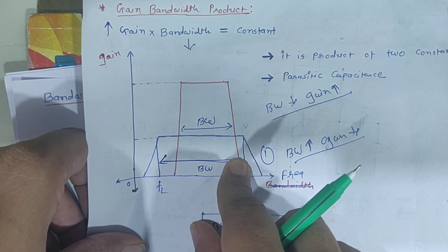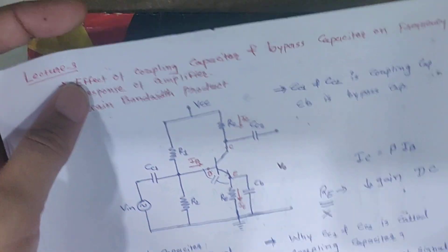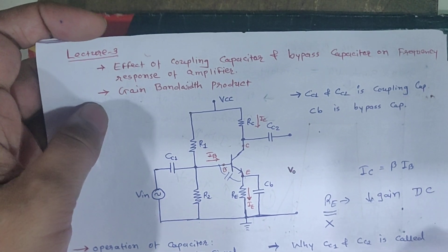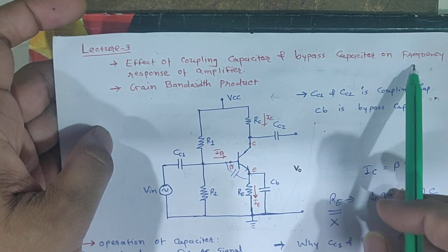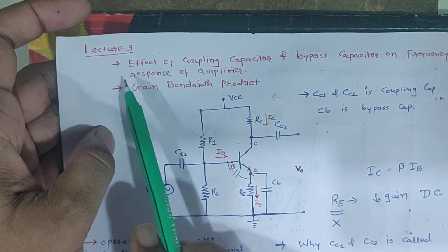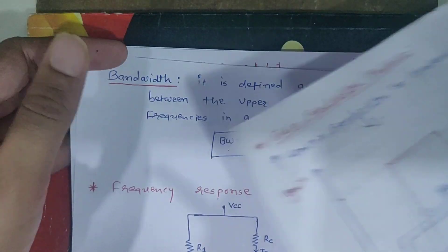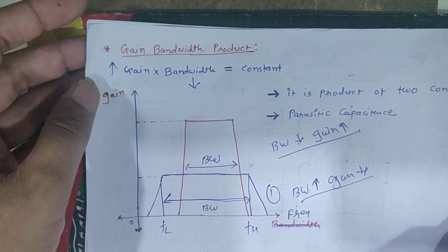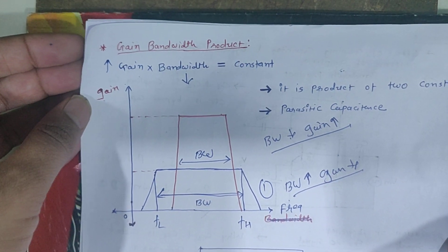As part of lecture number 3, we have concluded two topics: the effect of coupling and bypass capacitors on frequency response, and gain bandwidth product. Always remember that gain times bandwidth is always constant — if one parameter increases, the other must decrease.